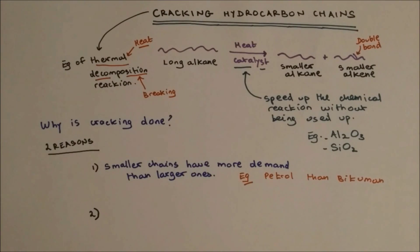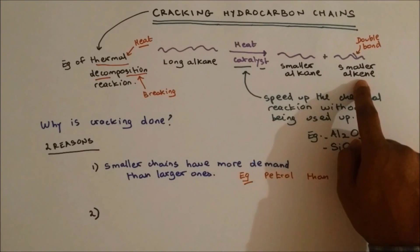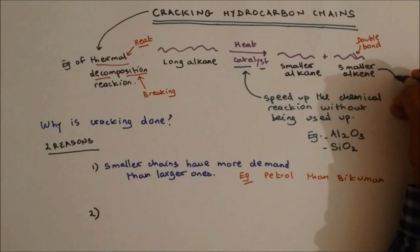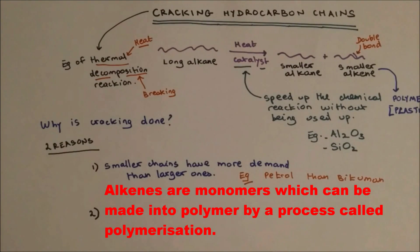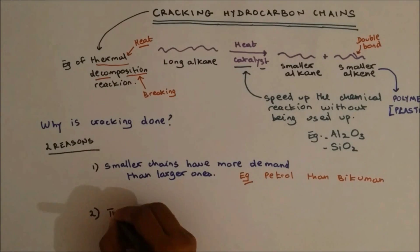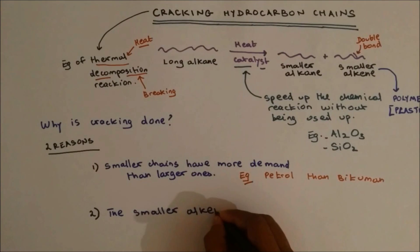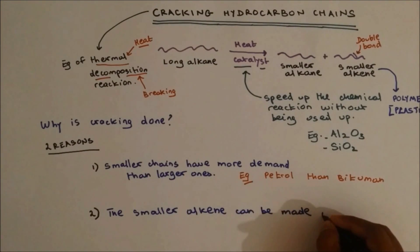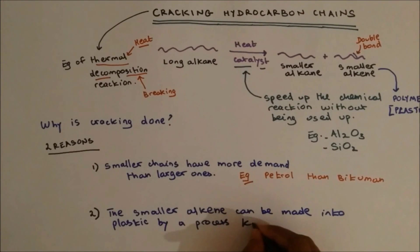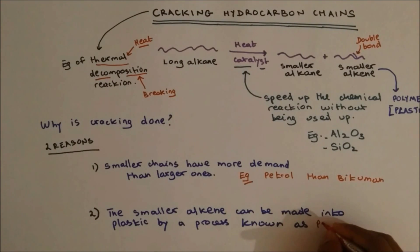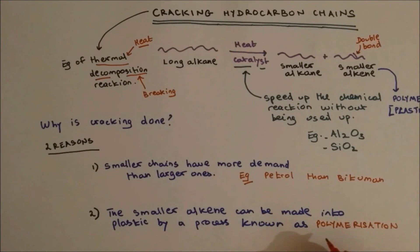Reason number two is that when breaking long hydrocarbon chains, alkenes are made. Alkenes can be made into polymers, and these polymers are plastics. So the second reason is because plastic can be made from alkenes. Smaller alkenes can be made into plastic by a process known as polymerization. I'll be doing polymerization later on in my videos.